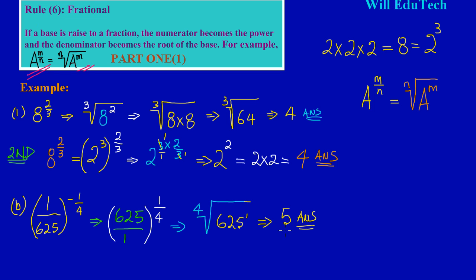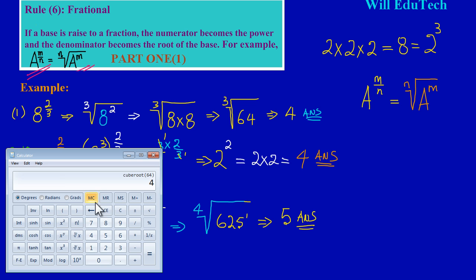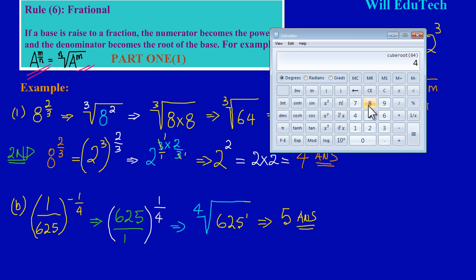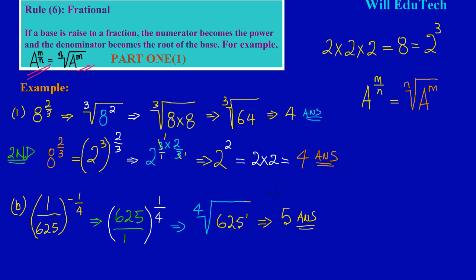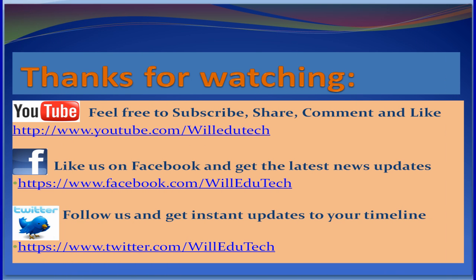Let me show you how to work that out on the calculator. To find the fourth root of 625, I clear the calculator and enter 625. I use the root button — the same button I pressed earlier — and press 4 for the fourth root. The fourth root of 625 equals 5. I hope this lesson was useful. Feel free to ask a question or leave a comment and we'll get back to you. Bye-bye.